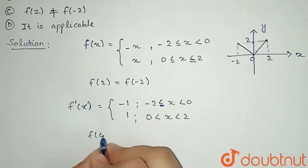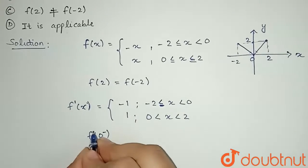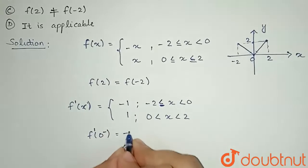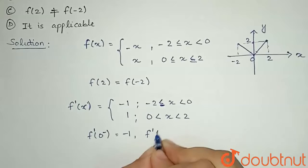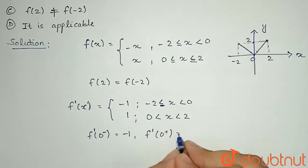if I find f dash of 0 minus, that will be minus 1. And if I find f dash of 0 plus, then it will be 1.